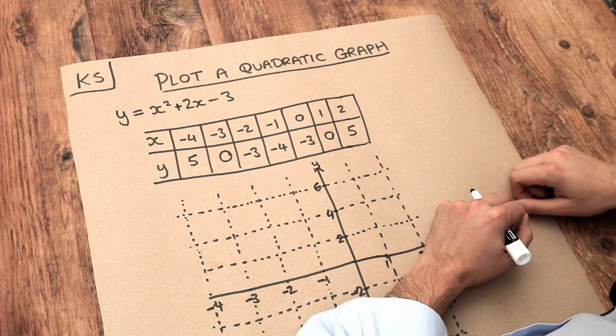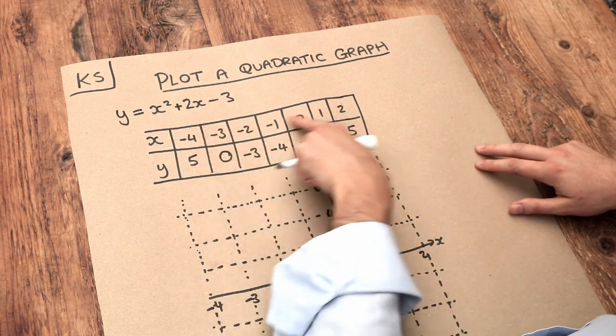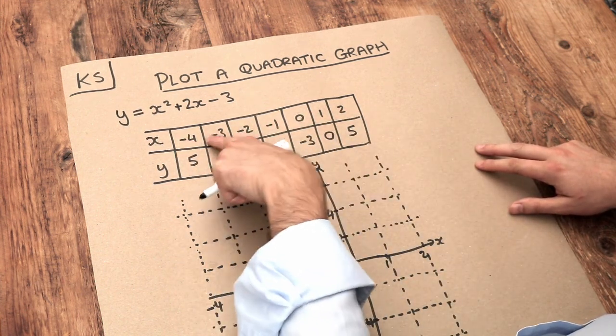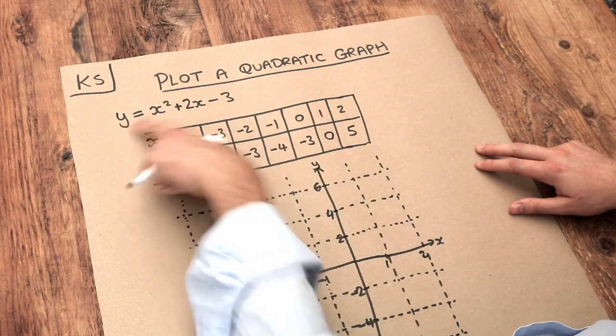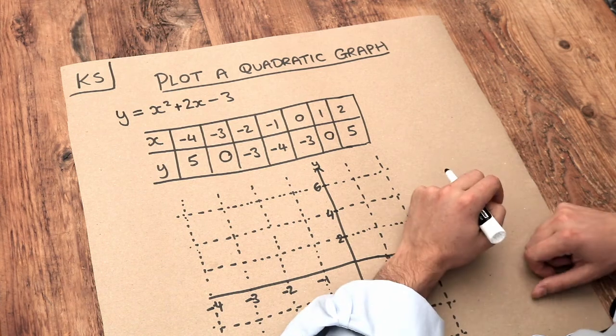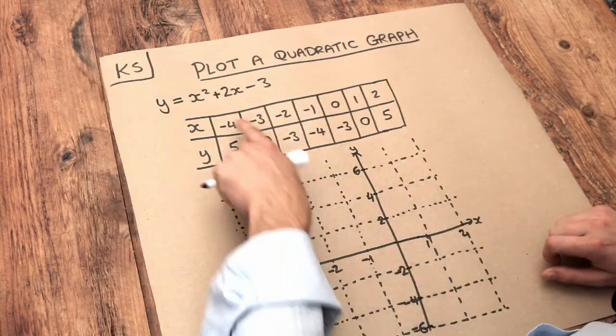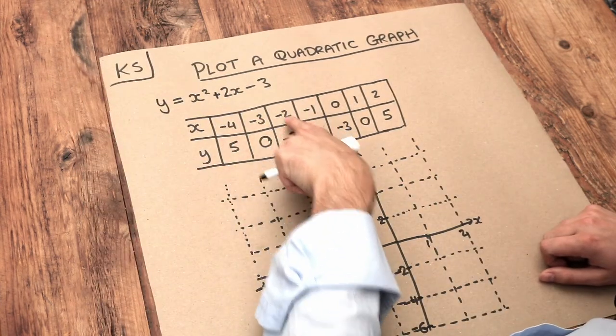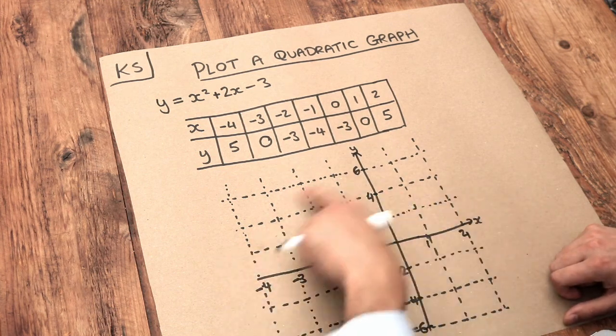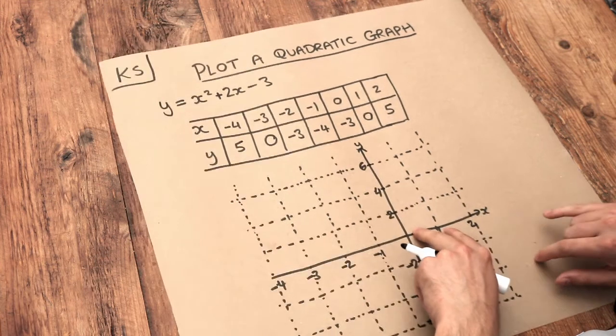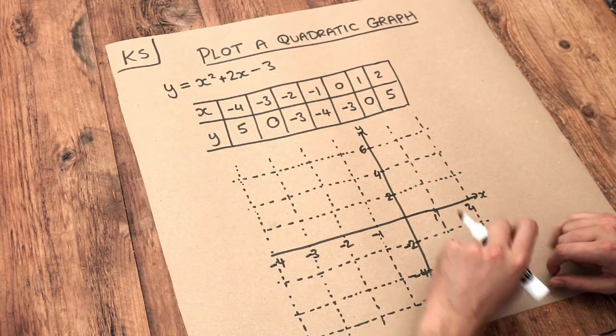In the previous video we saw how if we had a bunch of values of x, we could substitute each of these x values into that equation in order to work out what y was. And I'm not going to recover that here. So each of these x, y values represents a point that we want to plot on some axes here. So let's look at each point in turn and then just plot it and then join them up.